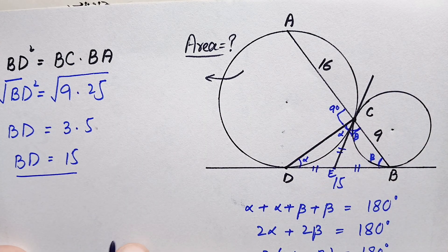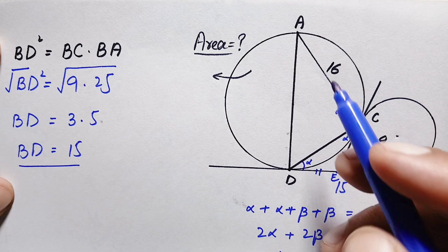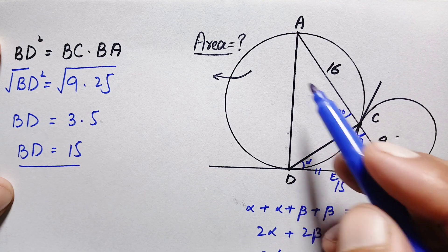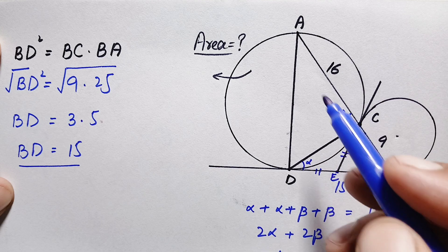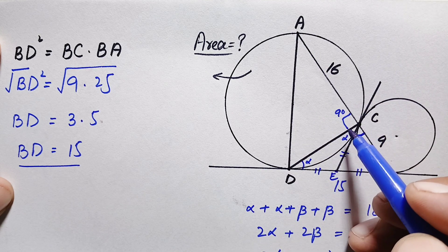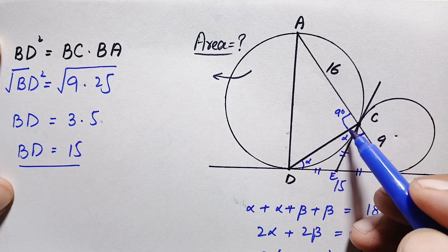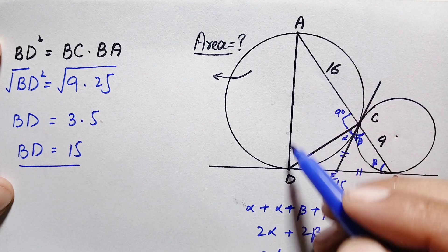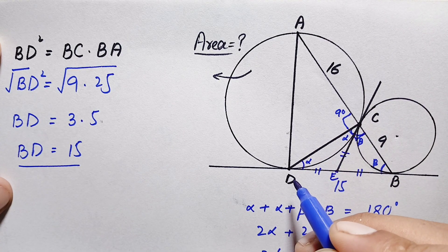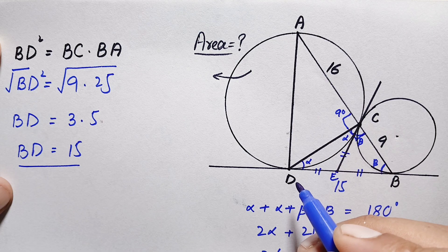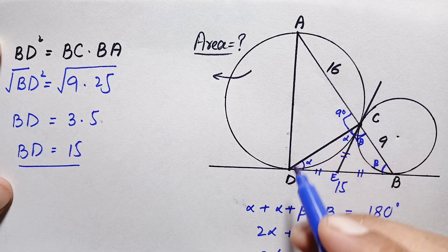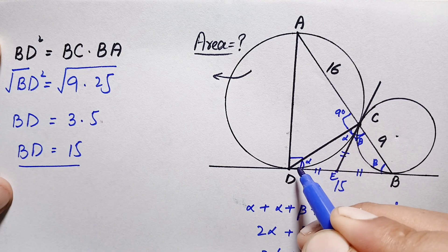Now we join point A with point D. By Thales' theorem, AD will be the diameter of the bigger circle, because if a triangle is inscribed in a semicircle with the angle opposite the diameter being 90 degrees, then that side is the diameter. Since this angle is 90 degrees, AD is the diameter. Also, the angle at point D is a right angle because the diameter is always perpendicular to the tangent line.